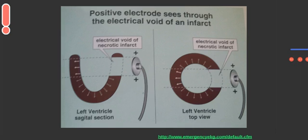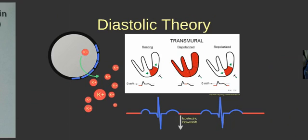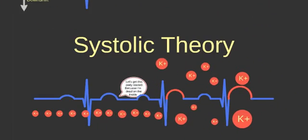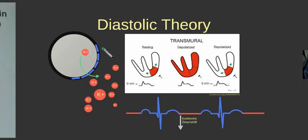But the two main theories that we want to look at are the diastolic theory and the systolic theory. The diastolic theory happens at rest, at contraction, after contraction of the ventricles when nothing is really firing.